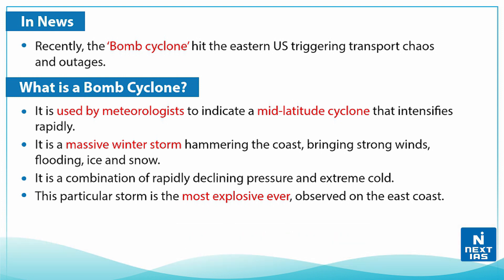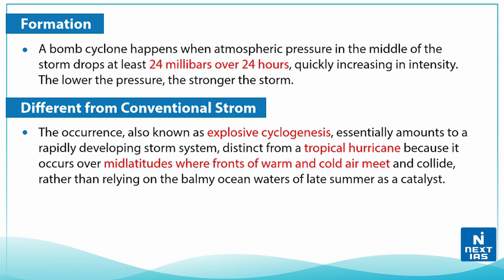This particular storm is the most explosive ever observed on the east coast. A bomb cyclone happens when the atmospheric pressure in the middle of the storm drops at least 24 millibars over 24 hours, increasing in intensity very rapidly. The lower the pressure, the stronger the storm.